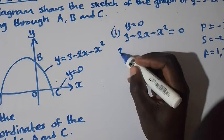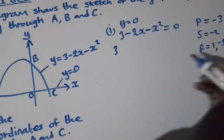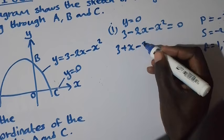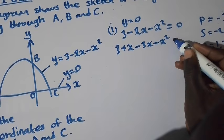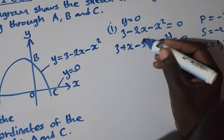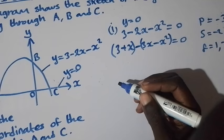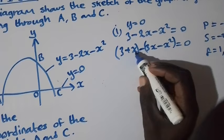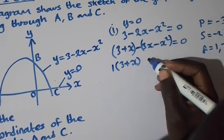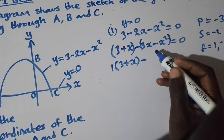Now we rewrite the equation, replacing the negative 2x term with the factors. So we have: 3 + x - 3x - x² = 0. After rewriting the equation, we group the terms so that we can factorize. What is common in the first group is 1, so factoring out 1 gives us (3 + x).